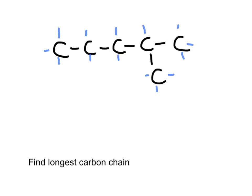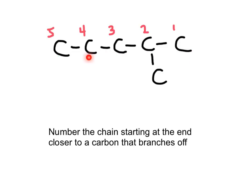Let's name this molecule step by step. We always need to find the longest hydrocarbon chain. No matter which end we begin from, this hydrocarbon is five carbons long. However, we must begin by the end that is nearer to the carbon that branches off the longest chain. It doesn't matter here because this molecule is symmetric. The labels are going to be important when assigning the prefix of this molecule.